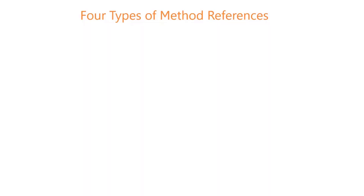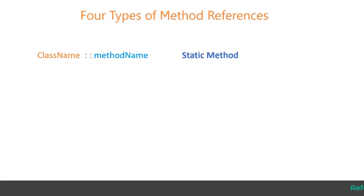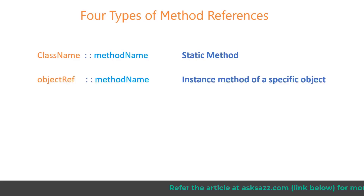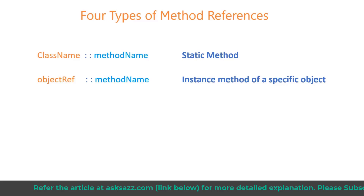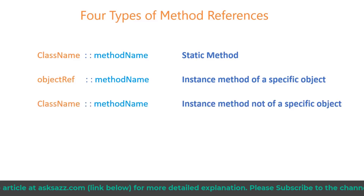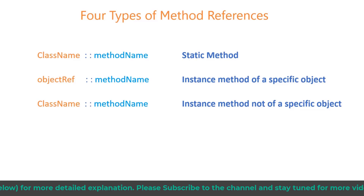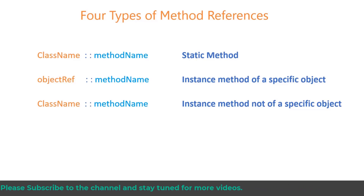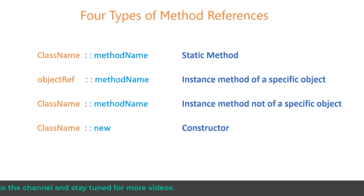Here is an overview of the four types. For a static method, the method reference consists of a class name, double colon, and the name of the method. For instance methods, there are two types. A method reference to an instance method of a specific object has a reference to the object before the double colon and the name of the method after the double colon. A method reference to an instance method which is not for one specific object has the class name before the double colon; the method will be called on what would be the first parameter of the lambda expression. Finally, a method reference to a constructor has the class name before the double colon and the keyword new after the double colon.